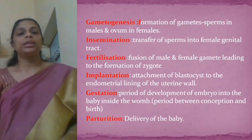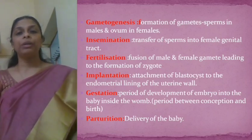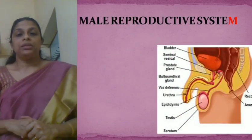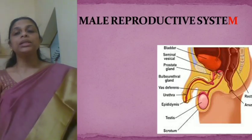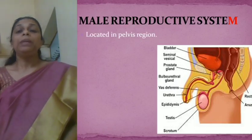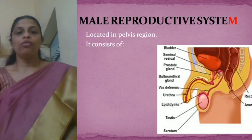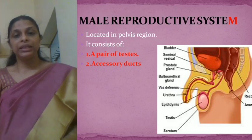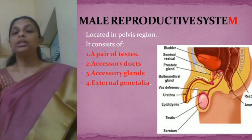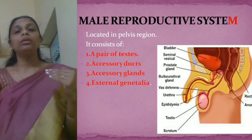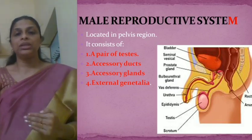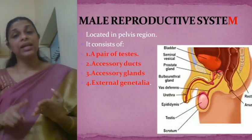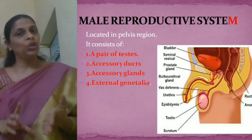Now in today's class let's discuss the male reproductive system. The male reproductive system is located in the pelvic region and consists of four major parts: a pair of testes, accessory ducts, accessory glands, and external genitalia.